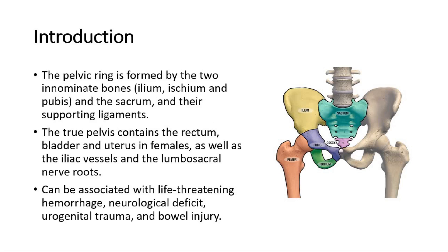We start first with the anatomy. The pelvic ring is formed by the ilium, ischium, pubis, sacrum, and their supporting ligaments.